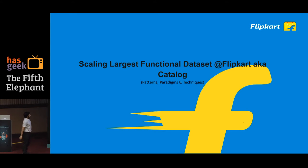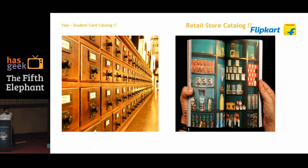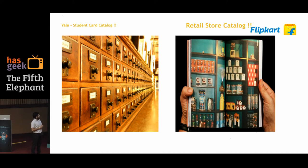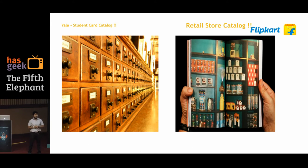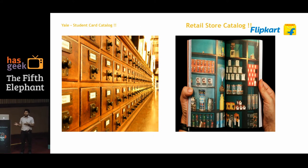Instead of giving a dictionary definition, let's relate catalog to real-life examples. On the left-hand side you see an array of boxes ordered by name — basically student grade cards or library cards kept in those boxes, carrying all student-related information. That's a student card catalog. On the right-hand side, if you've flown on flights like IndiGo, they have retail magazines where you can browse products they sell in-flight, with various information about those products including price.